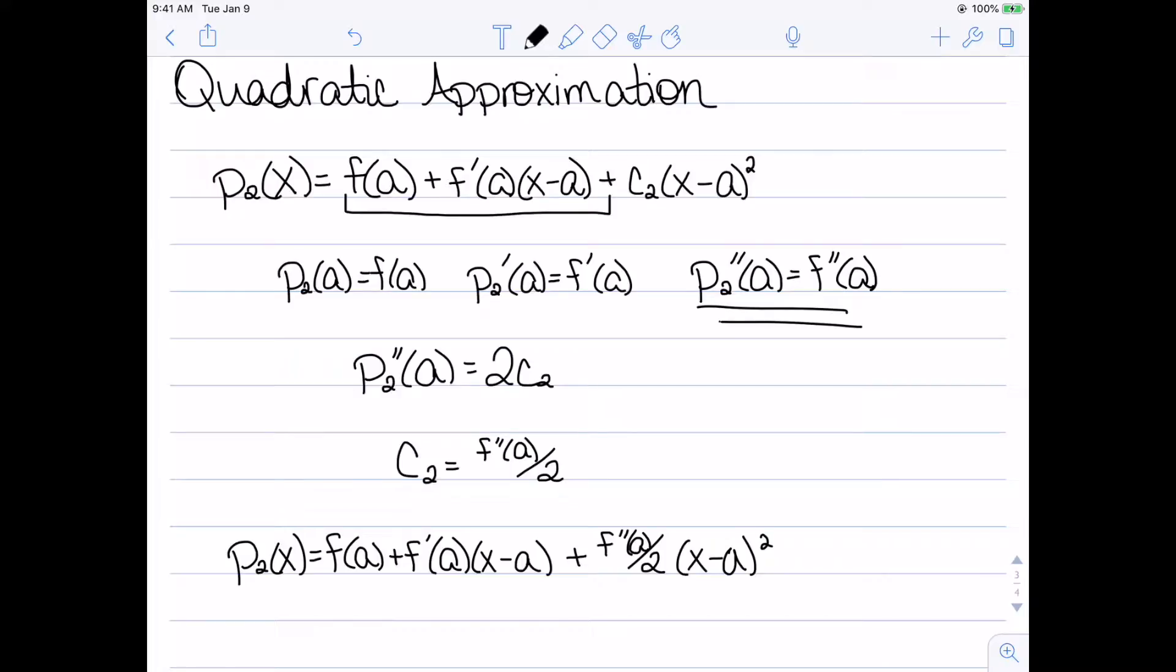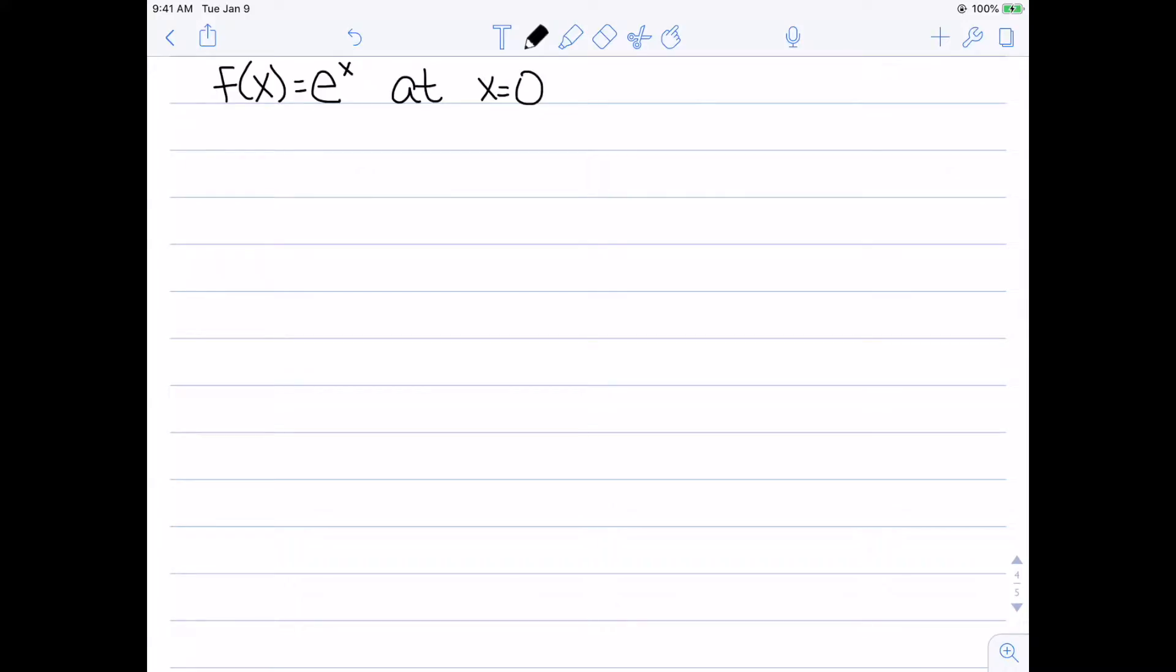So before we expand this idea, let's do a couple of examples for quadratic and linear approximations. So let's consider the function f(x) equal to e^x at the point x equal to 0. And I want to find both a linear and a quadratic approximation. So in order to do these, I'm going to need essentially three things. I need f(0), f'(0), and f''(0).